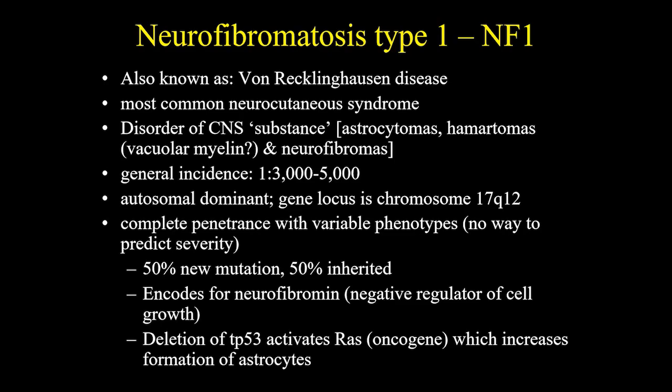Let's start with neurofibromatosis type 1, also known as Von Recklinghausen disease. It's the most common neurocutaneous syndrome. It's a disorder of CNS substance with astrocytomas, hamartomas, and neurofibromas. The general incidence is between 1 per 3,000 to 5,000 persons. It's an autosomal dominant disease with a gene locus in chromosome 17. It has complete penetrance with variable phenotypes.